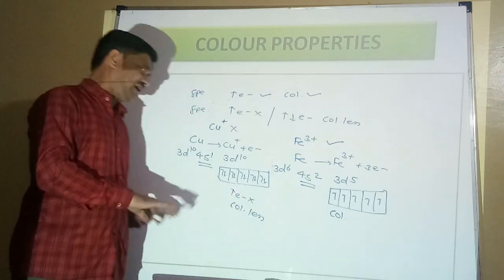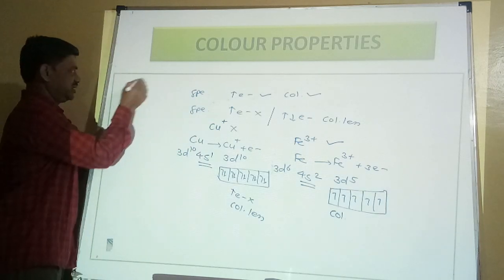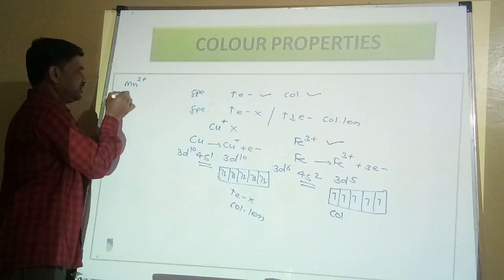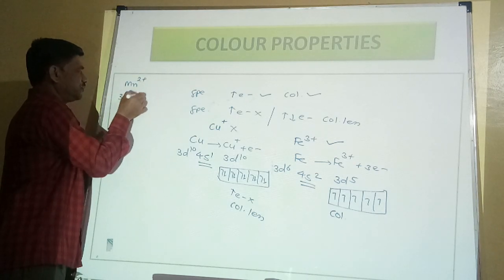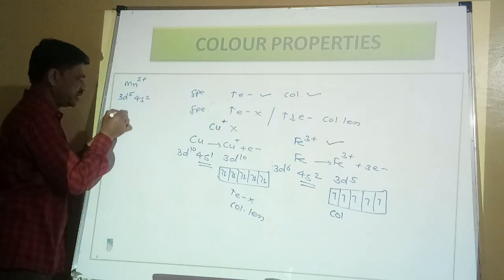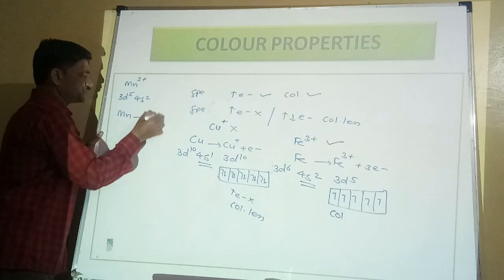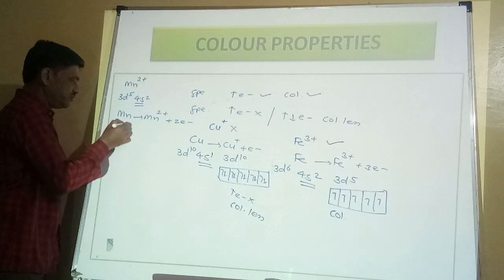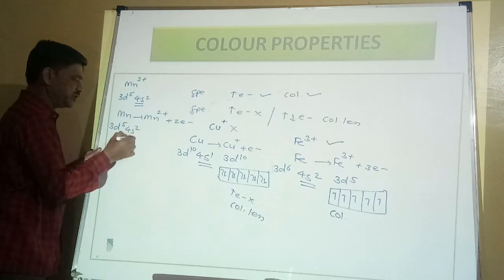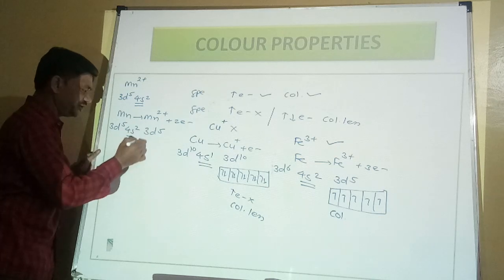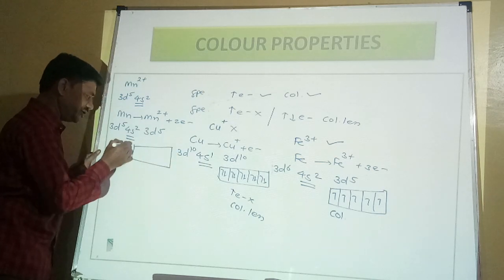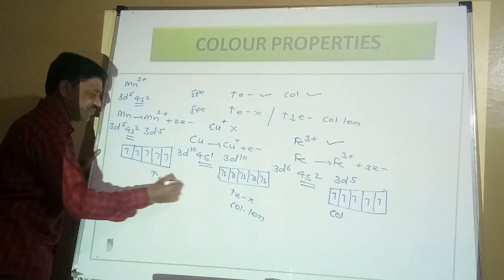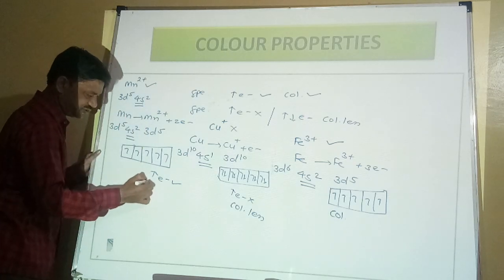Similarly, take Mn²⁺ (atomic number 25): Ar 4S² 3D⁵. To form Mn²⁺, 2 electrons are lost from 4S², leaving 3D⁵. The block diagram for 3D⁵ shows 5 unpaired electrons. So Mn²⁺ is found to be coloured.